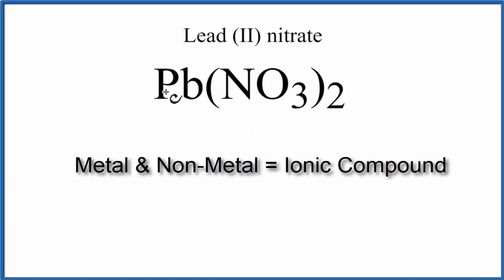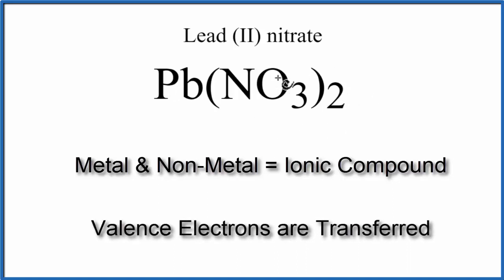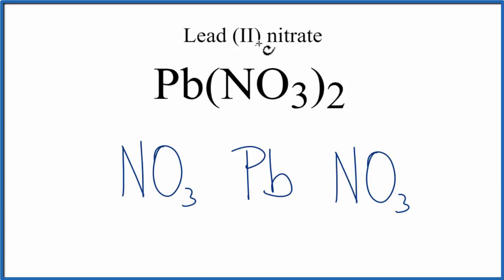In an ionic compound, the metal will transfer its valence electrons to the nonmetals. So we'll write Pb, and then we'll put NO3 on each side. So we can see in the name here for lead two nitrate this is two. That means the Pb has a 2-plus charge.